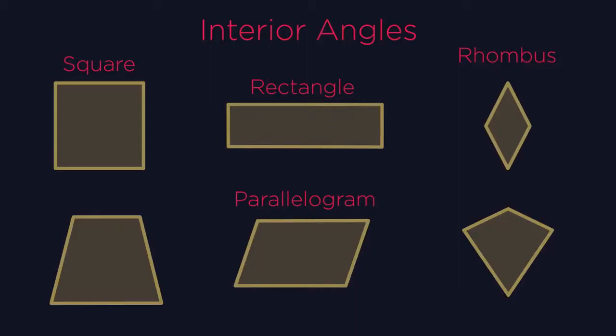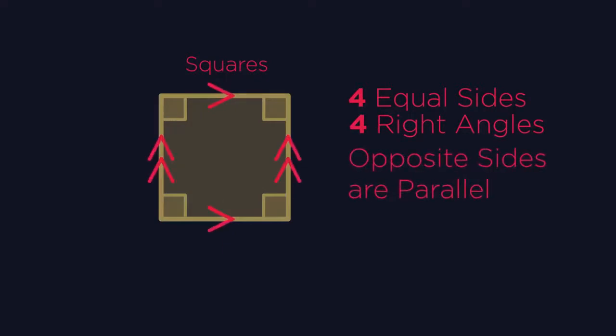So let's start at the top with the one you probably already know all about. Squares. Four equal sides, four right angles and opposite sides are parallel.